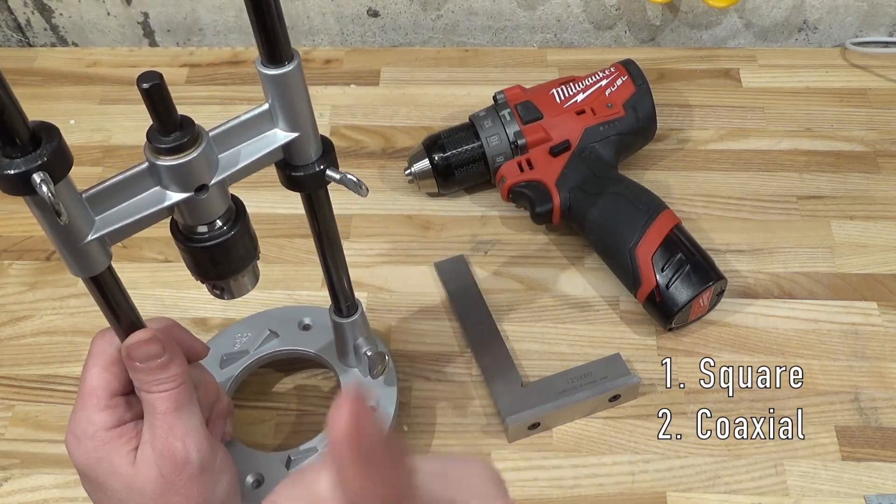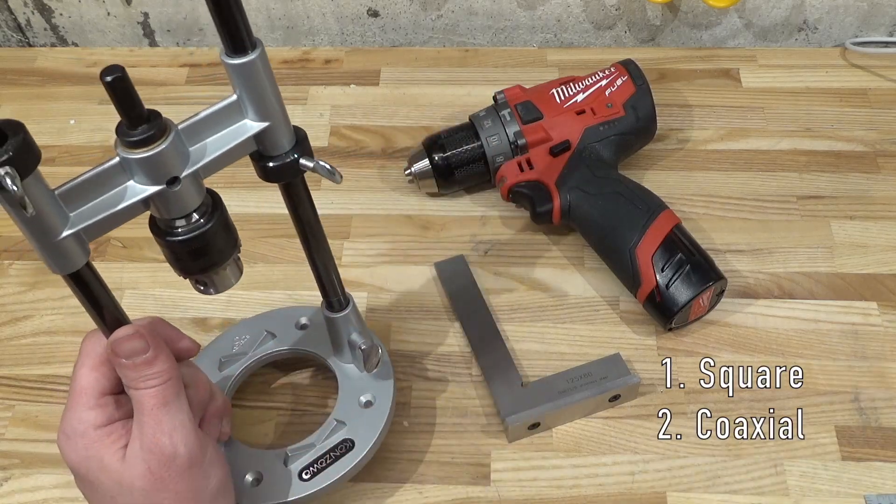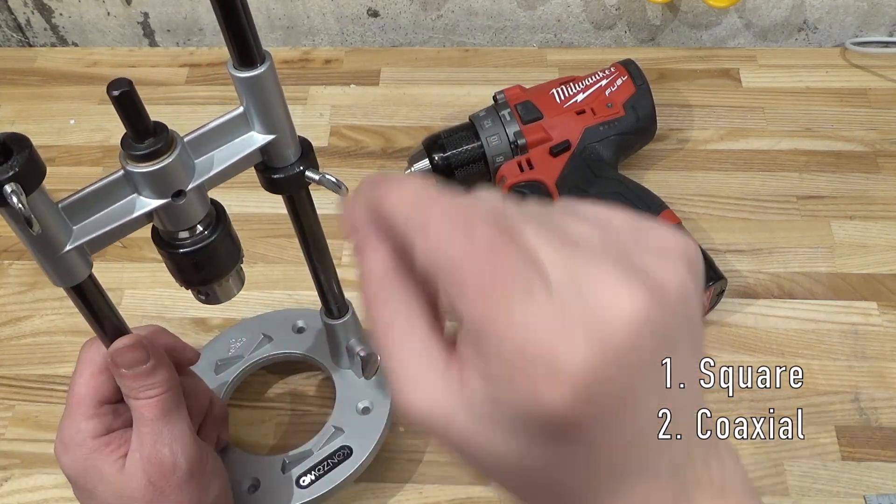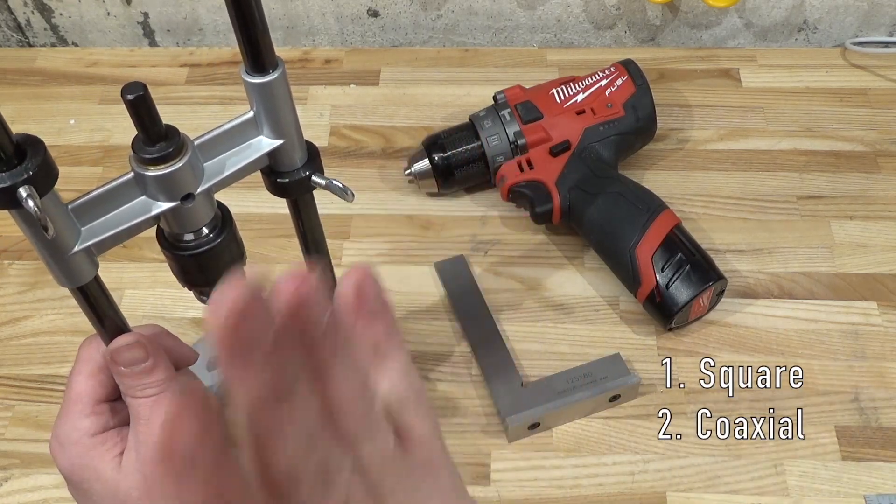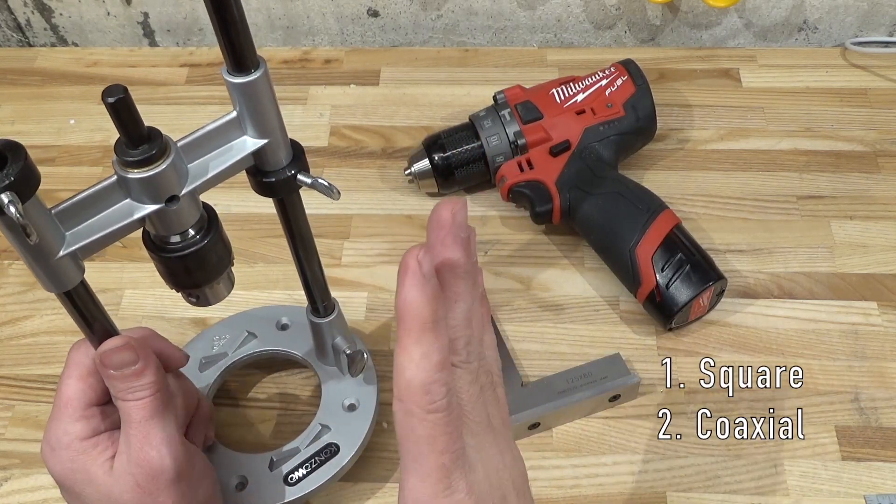If you're using a bit with a nice point, like a brad point or Forstner bit or something like that, it should work. Twist bits probably would work as well, but there might be some variation.